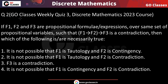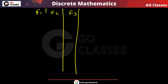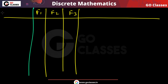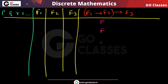Let's solve this question from GO Classes Weekly Quiz 3, Discrete Mathematics. If f1, f2, f3 are propositional formulas over some set of propositional variables such that f1 implies f2 implies f3 is a contradiction, then which of the following is necessarily true? The question tells us that f1→f2→f3 is a contradiction, meaning it is false for every combination of truth values.